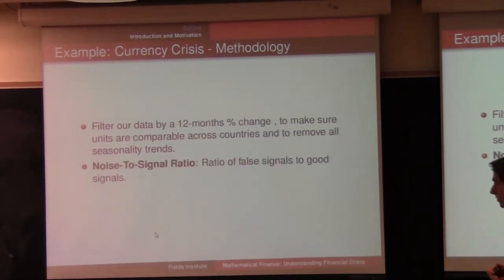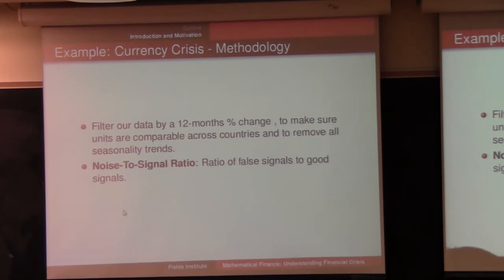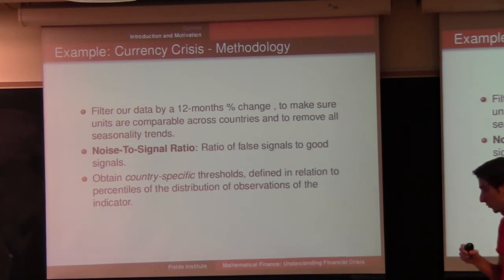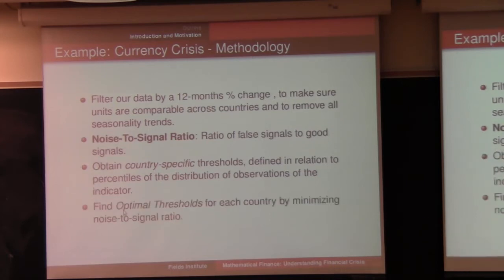We introduce the notion of noise-to-signal ratio — the ratio of false signals to good signals. A good signal is one that occurs within the 24-month window before a crisis; otherwise, it's a bad signal. We obtain country-specific thresholds defined in relation to the percentile distribution of each indicator, and find the optimal threshold by minimizing the noise-to-signal ratio.